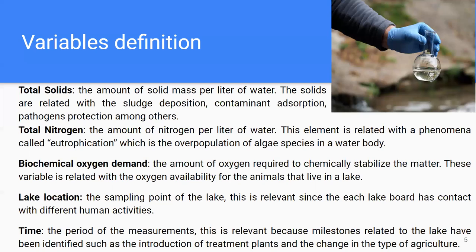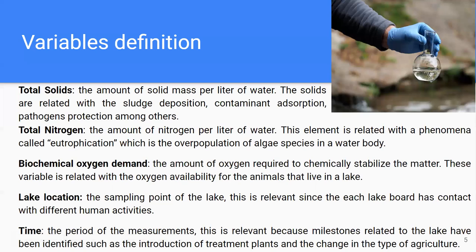The biochemical oxygen demand is the amount of oxygen required to chemically stabilize the matter. This is related to the oxygen availability for the animals that live in the lake. We also have two categorical variables: lake location, or the sampling point of the lake — there are four — and time, which is the period of the measurement. This is relevant because of milestones such as the introduction of treatment plants and changes in the type of agriculture.